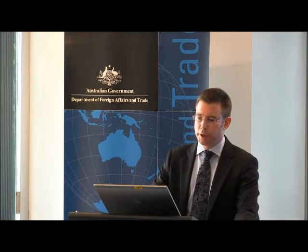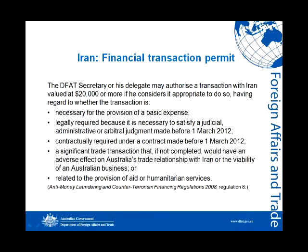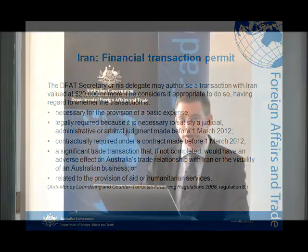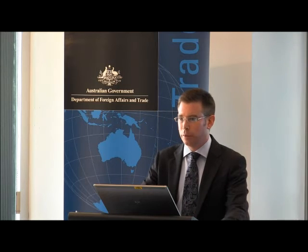For a financial transaction permit, the DFAT secretary or his delegate may authorise a financial transaction of $20,000 or more if he considers it appropriate to do so — that's the fundamental criterion. The secretary will have regard to whether the transaction fits under one of five headings. The one I'd really draw your attention to is the fourth, which refers to a significant trade transaction that, if not completed, would have an adverse effect on Australia's trade relationship with Iran or the viability of an Australian business — and we're pretty liberal in how we interpret those terms.